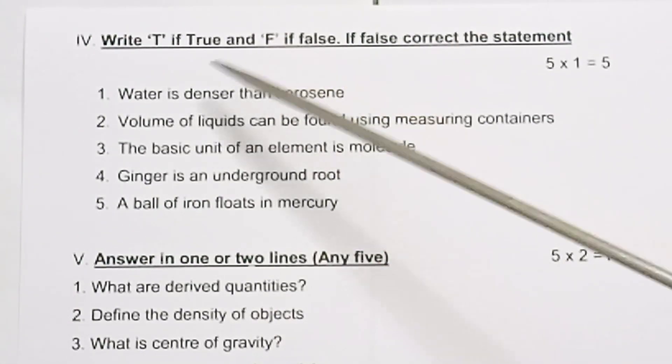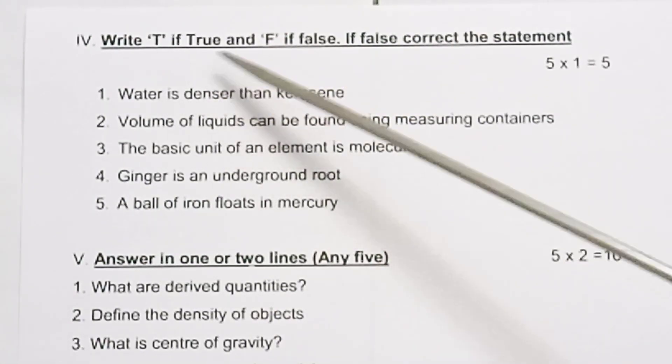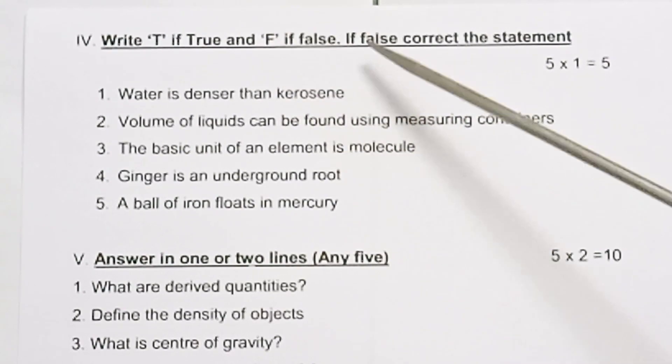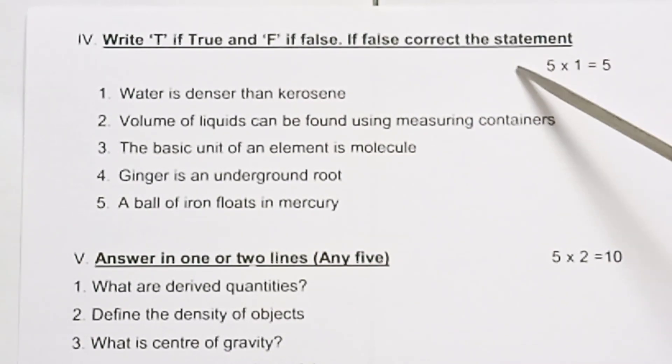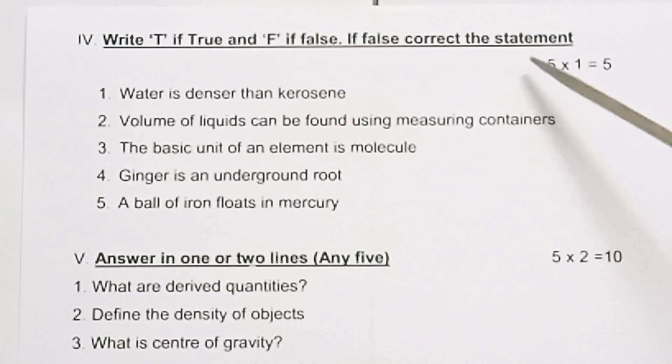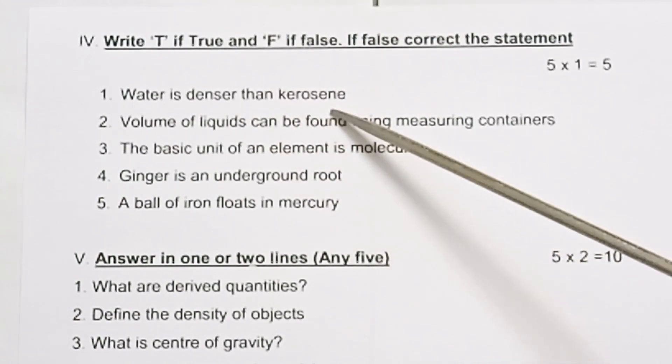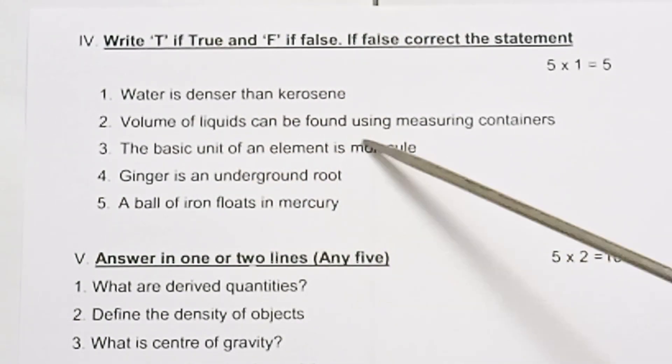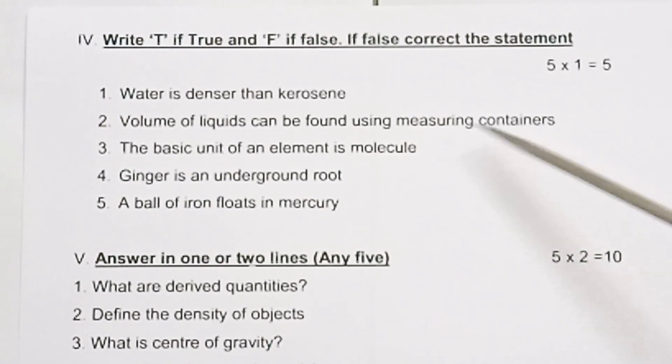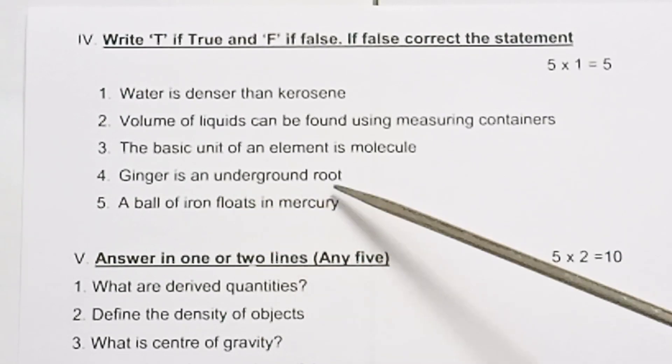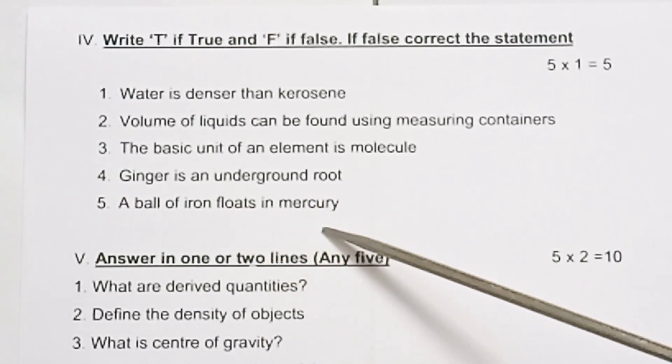Format 4: Write true or false. If true, write T. If false, DF. If false, write the corrected statement. If true or false equals false, corrected statement equals 1 mark. 5 into 1 equals 5. Water is denser than kerosene. Second: volume of liquid can be found using the measuring container. Third: the basic unit of an element is molecule. Ginger is an underground root. A ball of iron floats in mercury.